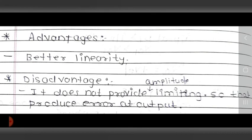The advantage of the phase discriminator is better linearity. The disadvantage is that it does not provide amplitude limiting, which produces error at the output. Since no limiter is used, error will be produced at the output. This is the detailed description about the phase discriminator.